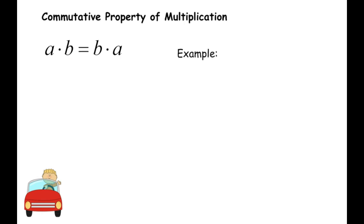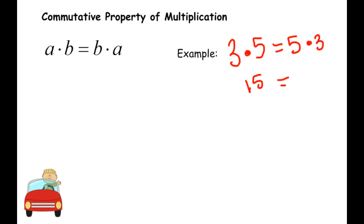Commutative property of multiplication works the same way — A times B equals B times A, and you still get the same answer. So 3 times 5 is 15, and 5 times 3 is also 15. Either way you write it, you get the same answer. The commutative property of multiplication lets you flip those numbers around and still get the same result.